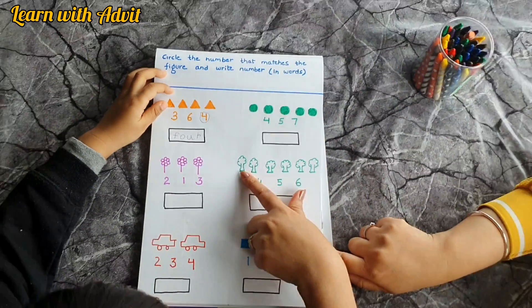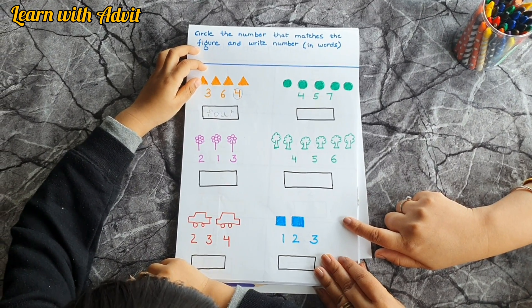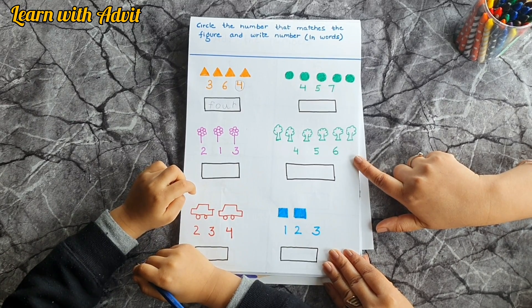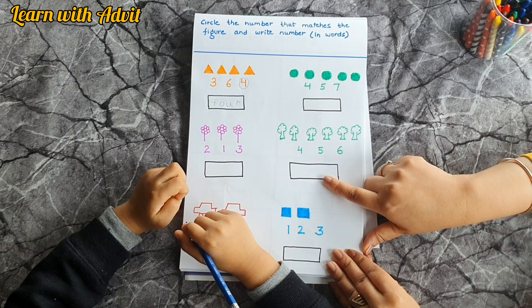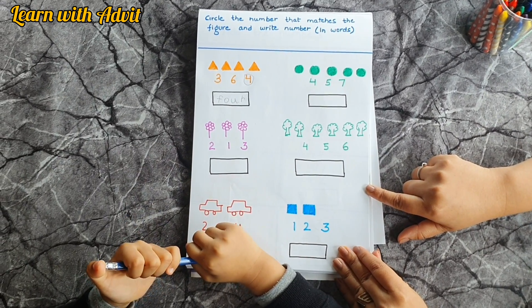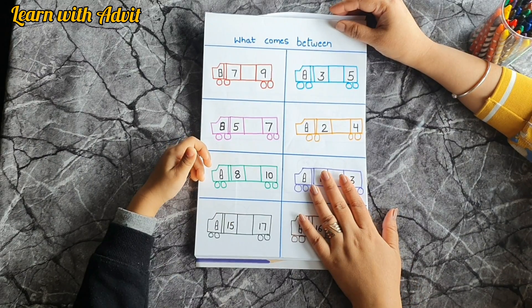Okay, so can you tell me how many trees? Six, six. So you have to, sorry, circle the number six, six. And can you tell me the spelling of six? S-I-X, very good.